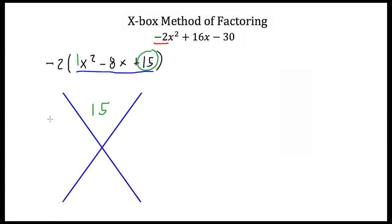Then you take your middle term, or your linear term coefficient — this negative 8, the number being multiplied by x — and that goes in the bottom. Then go back up to the top where you have this 15, and you need to find all the factors of 15. Those are 15 and 1, and 5 and 3.